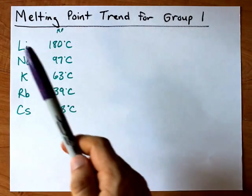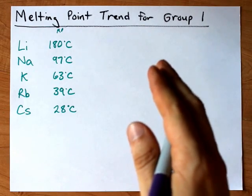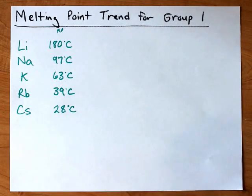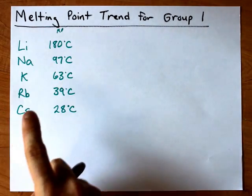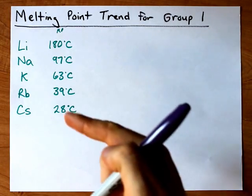What you'll notice is that lithium, which is the lightest alkali metal and has the lowest atomic number, has the highest melting point. Cesium, the largest stable alkali metal, has the lowest melting point,